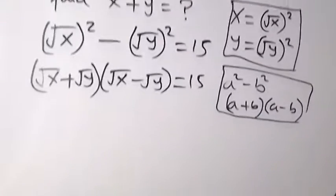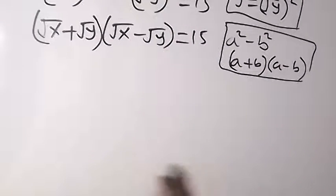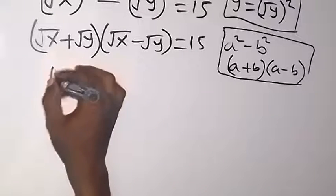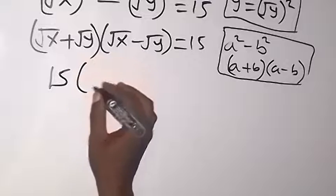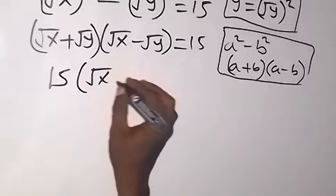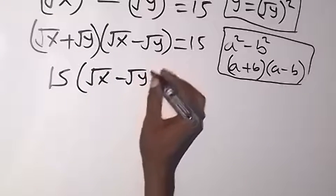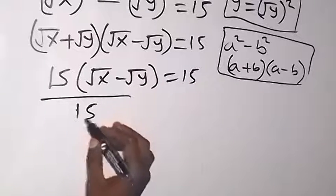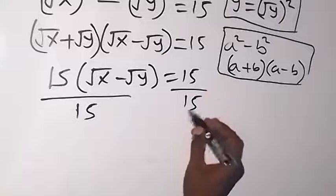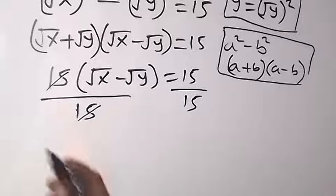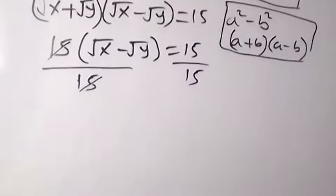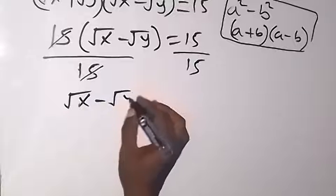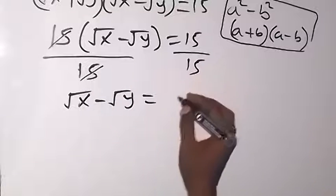So we can substitute — instead of writing root x plus root y here, we write 15. So we have 15, which is root x plus root y, multiplied by root x minus root y, equal to 15. Then let's divide both sides by 15 — 15 will cancel 15.